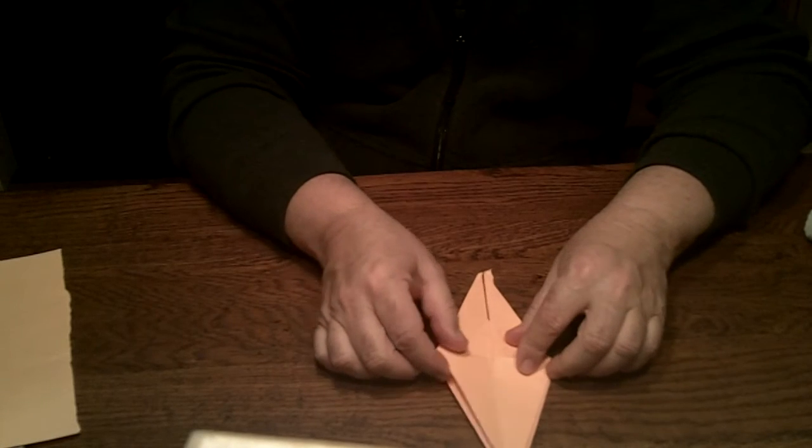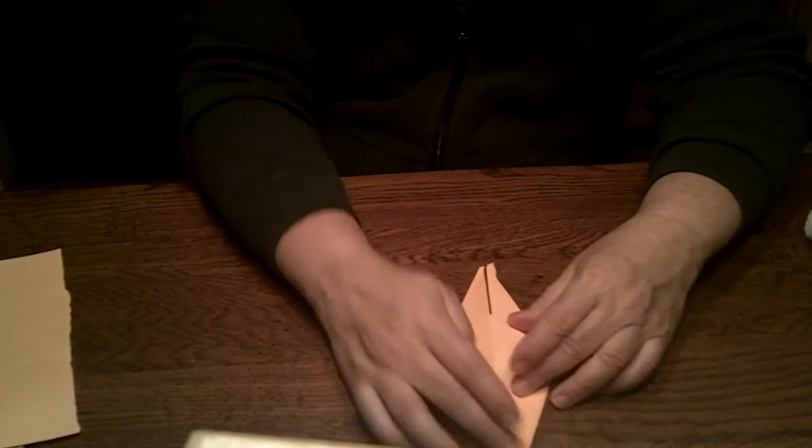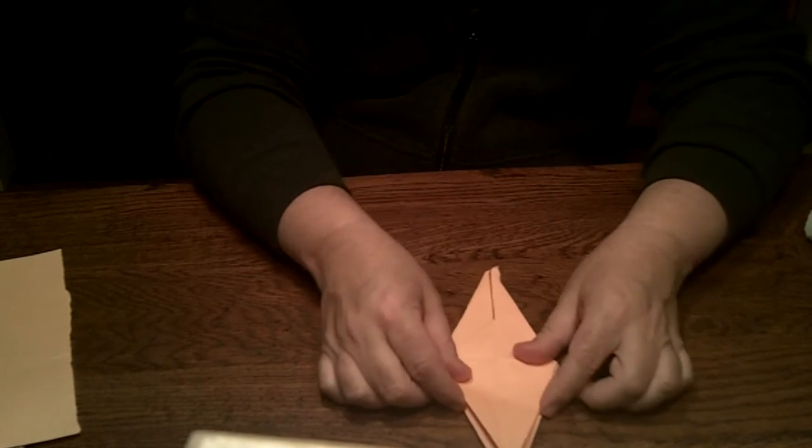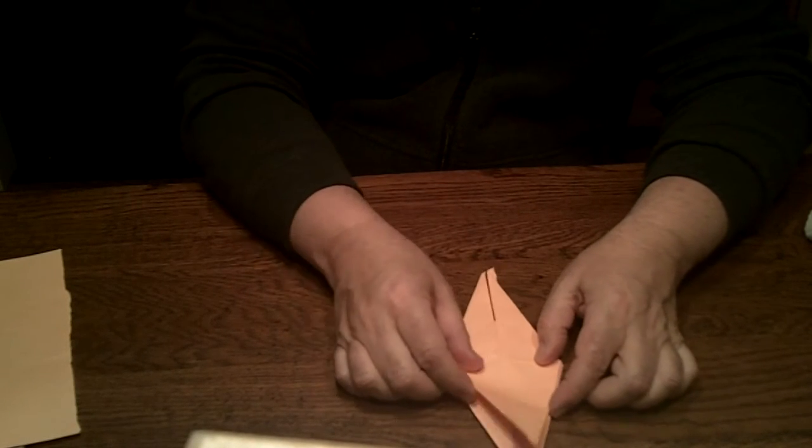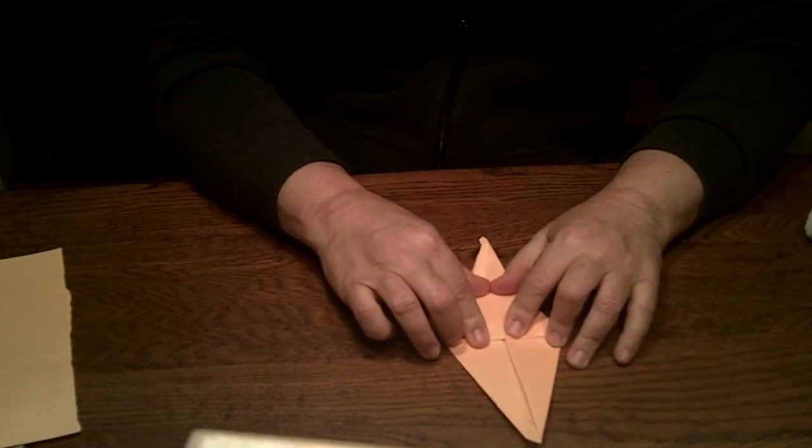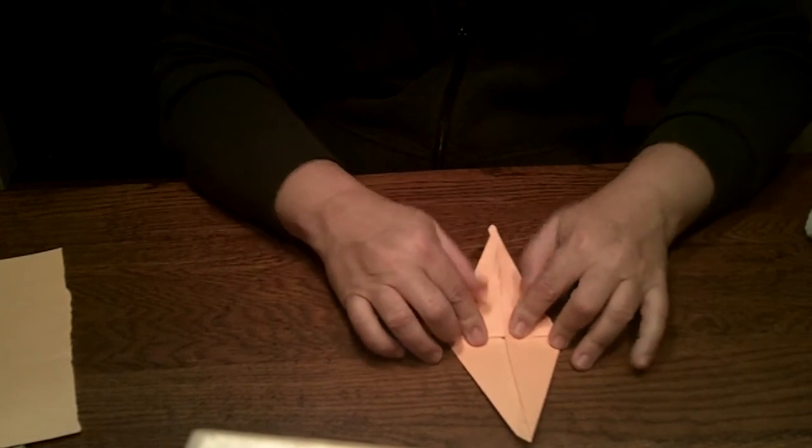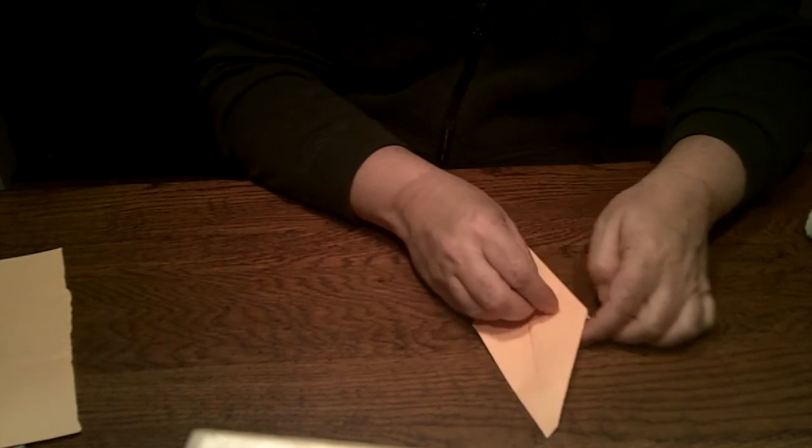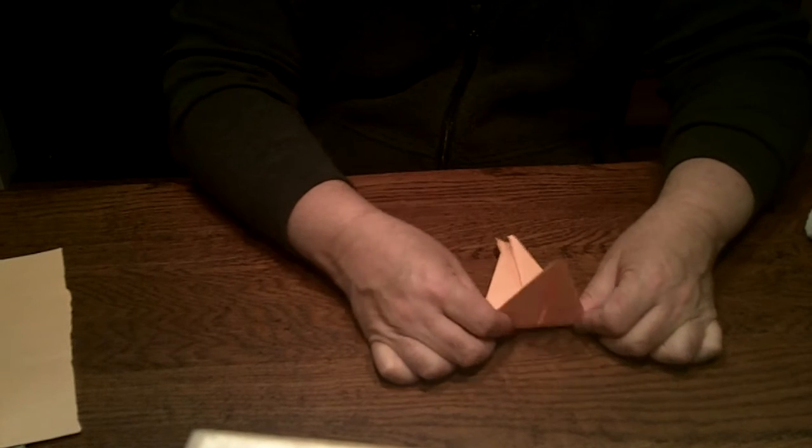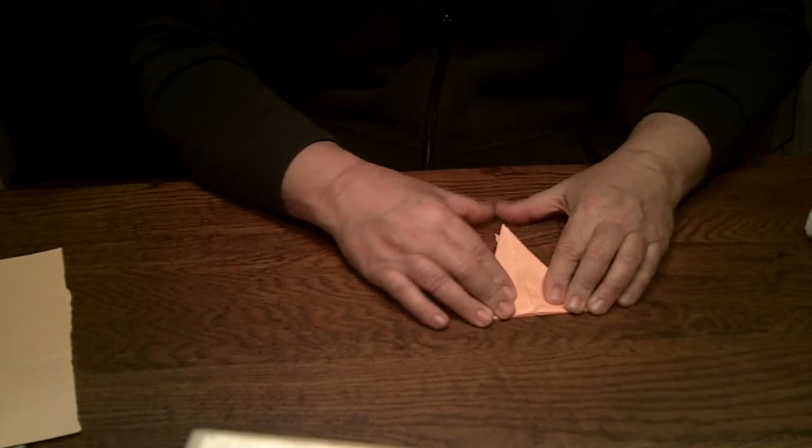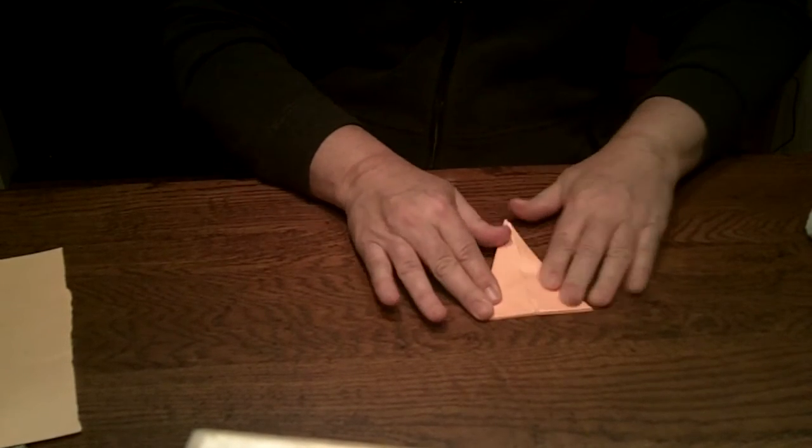So at this point you should have kind of a kite shape with these two sort of arms sticking up. Now you're going to see this line is still there. You're going to flip this up. And then you're going to flip the whole thing. Flip this up. You can flatten everything best you can.